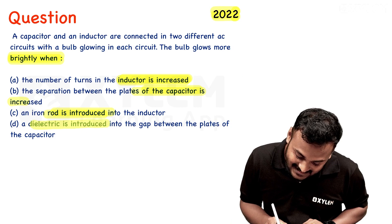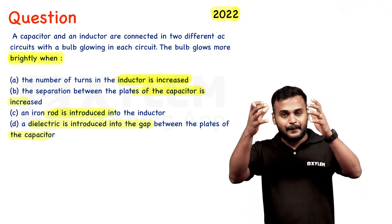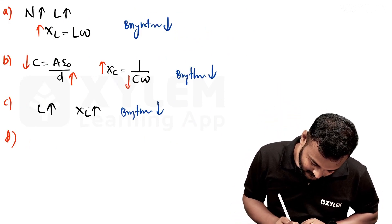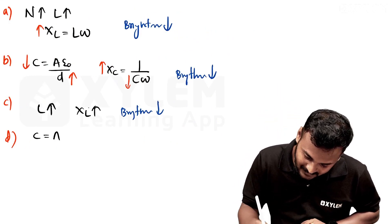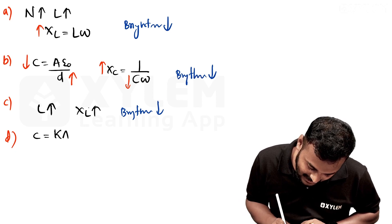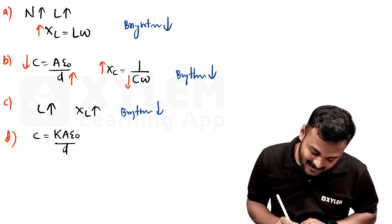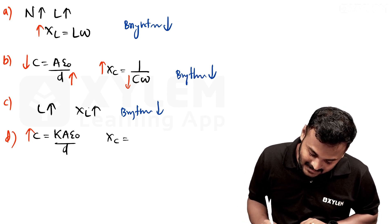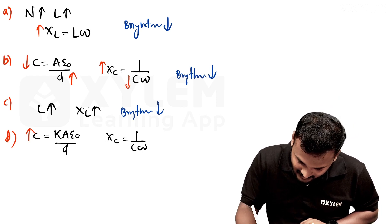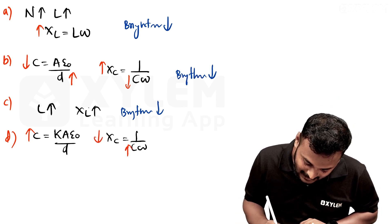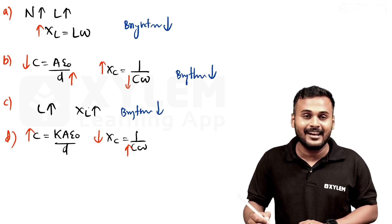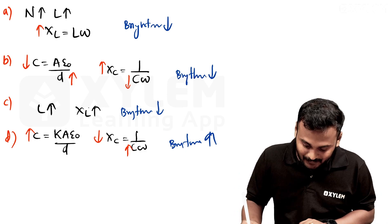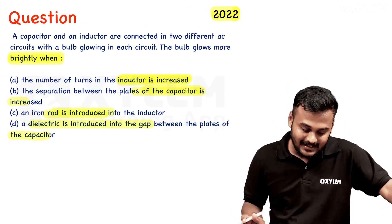Option D: a dielectric is introduced between the plates of the capacitor. C equals K·ε₀/d, so the dielectric constant K increases capacitance. With capacitance increasing, XC equals 1/(C·ω) decreases, so capacitive reactance decreases, current increases, and brightness increases. Therefore option D is the right answer.